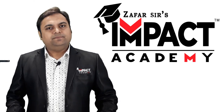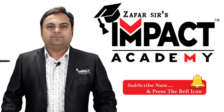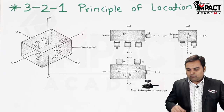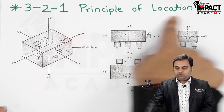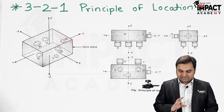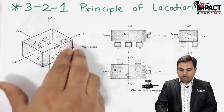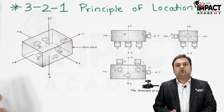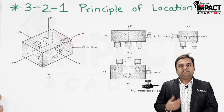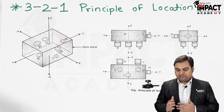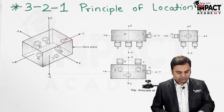Hi friends, in this video I will be explaining the 3-2-1 principle of location. Whenever we have an object or a body kept in space, that body has 12 degrees of freedom, and how these 12 degrees of freedom come about, I am going to explain that here.